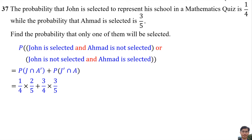John is selected is 1 over 4. Ahmad is not selected, so 1 minus 3 over 5 equals 2 over 5. John is not selected, so 1 minus 1 over 4 equals 3 over 4. Ahmad is selected, so it's 3 over 5.